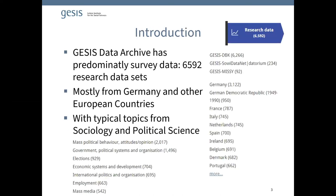The GESIS Data Archive has a large collection of surveys, covering mostly Germany but also other European countries, on typical topics in sociology and political science — political behavior, government issues, elections, economic topics, and media topics. These are all part of our data collections: the GESIS DBK (data catalog), sovi-datanet datorium (our self-archiving and institutional repository, also used in collaboration with journals), and GESIS Missy, a special case where we have the metadata but not the data — it's official micro data.